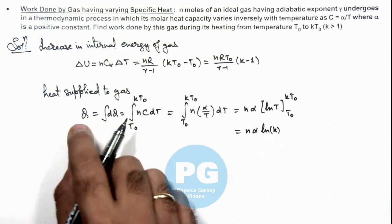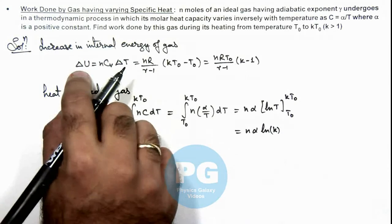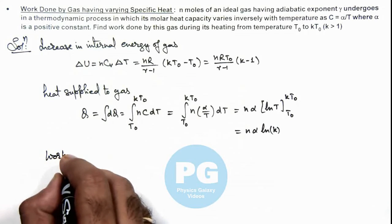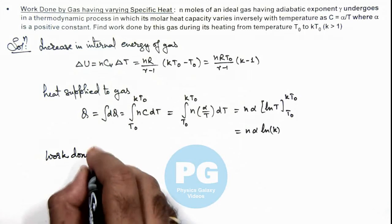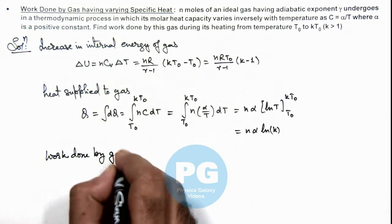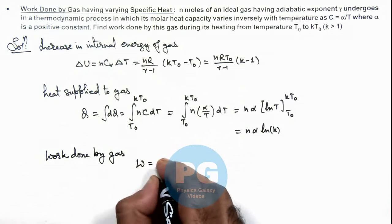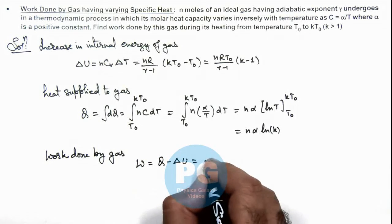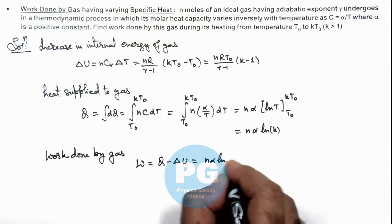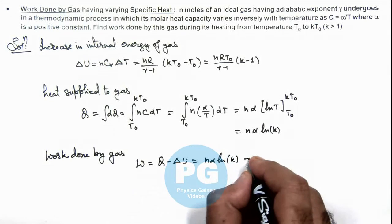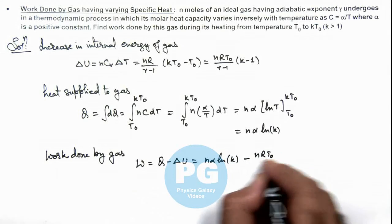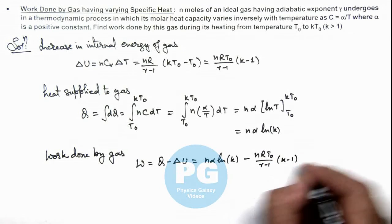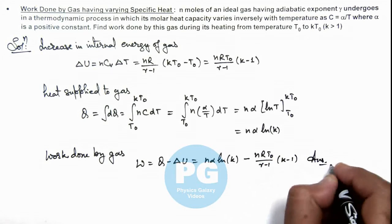As we are having the amount of heat supplied and increase in internal energy, we can calculate the work done by gas as W = Q - ΔU. So this is n alpha ln k minus nRT₀/(γ-1) × (k-1). That is the result of this problem.